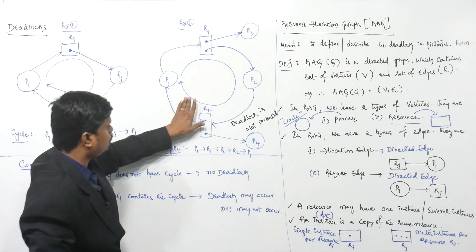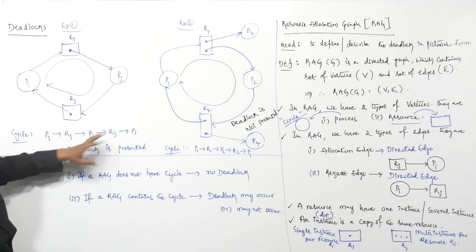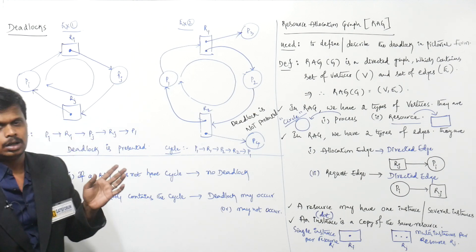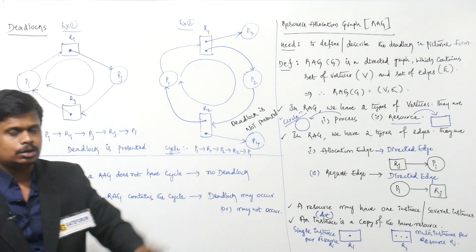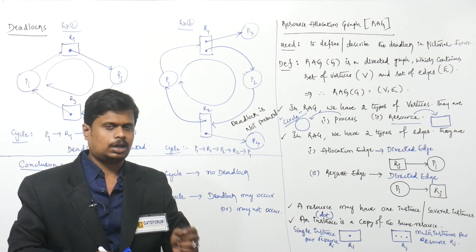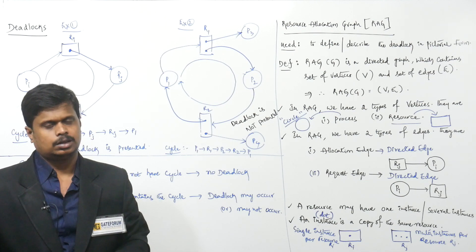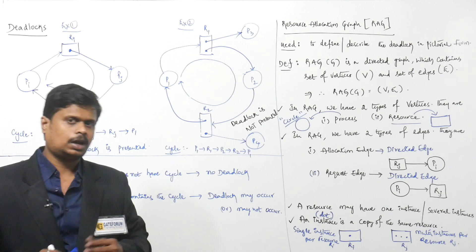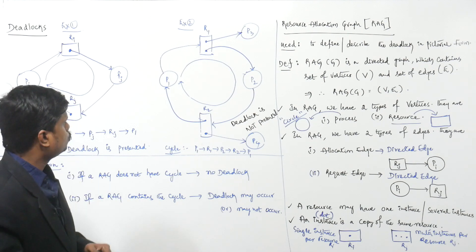Once an instance becomes free, I can allocate it to p1 so that p1 gets completed. Similarly, once the instance of r2 gets free, I can allocate it to p2 so that p2 also gets completed. So all four processes are able to complete their execution. Even though I have a cycle here, I don't have deadlock. This is what the case here.